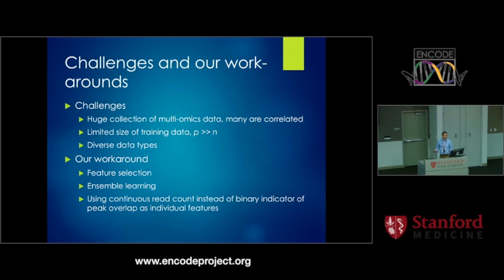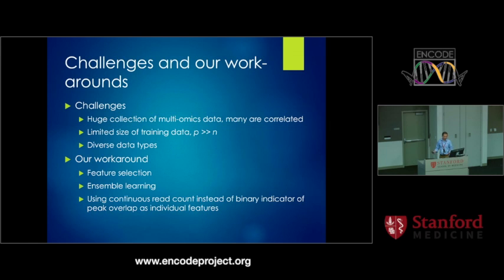The challenge we face is that we have a huge collection of multi-omics data, and another challenge is that the training data can be very limited — for some diseases, we have fewer than 50 known variants, making it a high-dimensional, small-N problem. Our workaround uses machine learning techniques like feature selection and ensemble learning. Importantly, instead of using a binary indicator of whether a variant overlaps a peak, we use a continuous read count as the feature, which we believe improves performance.